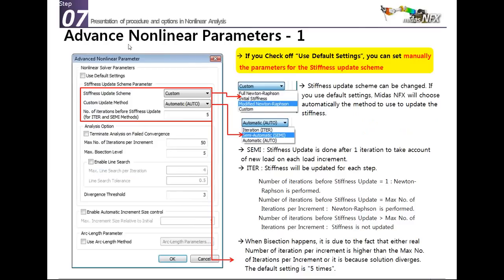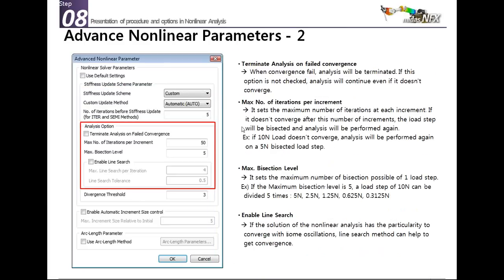In the advanced nonlinear parameters, you can choose the update method for stiffness: semi-automatic, automatic, or each iteration. You can also set options to terminate the analysis on failed convergence instead of applying bisection, set the maximum number of bisections (default 50, which can sometimes be reduced), and enable the line search method.